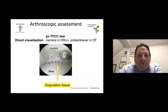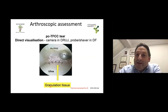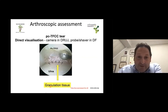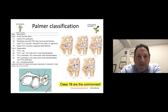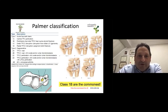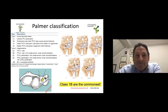In terms of proximal TFCC visualization, you can put the camera in the DRUJ and use your probe or shaver ulnarly. However, that is quite difficult and intricate to do. Remember the Palmer classification — it is very important for your FRCS exam. It's the universally recognized classification of TFCC tears. Type 1 are the traumatic tears and type 2 the degenerative tears, and depending on which type you are seeing, there are specific treatments.